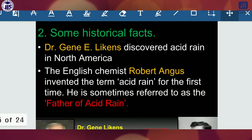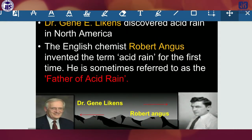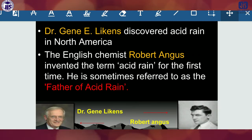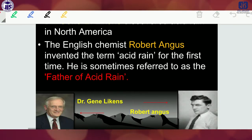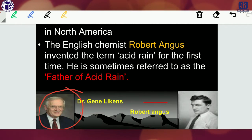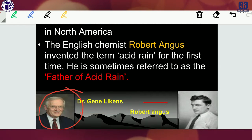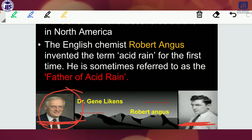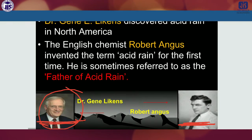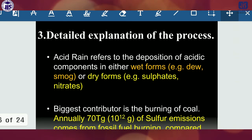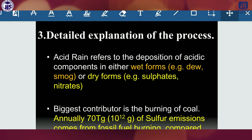Some historical facts: Dr. Jean E. Litton discovered acid rain in North America — he is the man who discovered acid rain first. The English chemist Robert Angus Smith invented the term 'acid rain' for the first time; he is sometimes referred to as the father of acid rain. These two scientists are very much related to the history of acid rain.